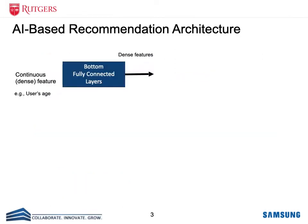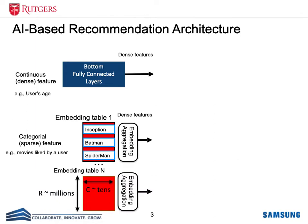Now let's take a look at the architecture of this AI-based recommendation system. I'm using the example of a recommendation system that recommends movies to users. Like many deep learning models, this recommendation system uses fully connected layers or dense layers to extract dense features from the user's input. Beside this dense feature, recommendation systems also use categorical or sparse features as well.